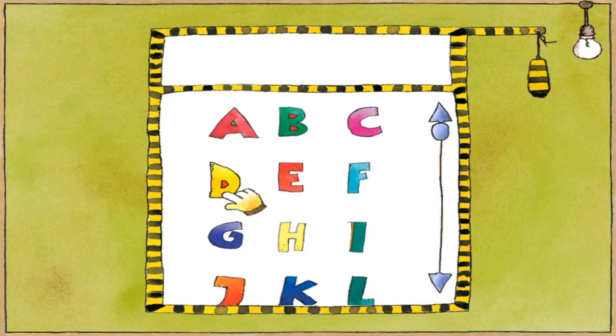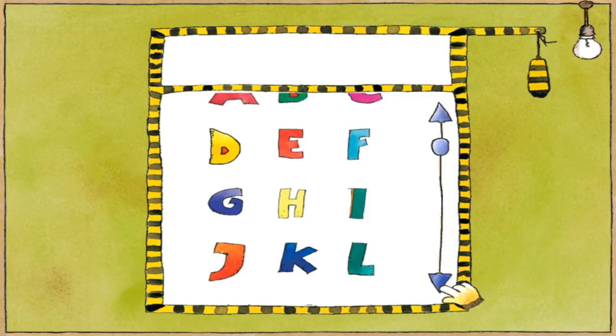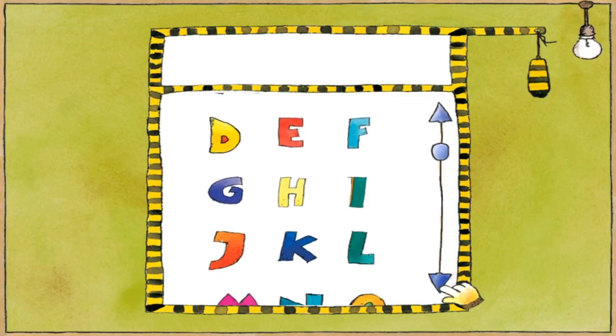Danach suchst du dir einen bunten Buchstaben aus und klickst ihn an. Und dann bitte auf die Tigerstreifenstrippe da rechts klicksen. Aber erst, wenn du wirklich mit allem fertig bist.